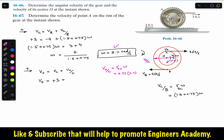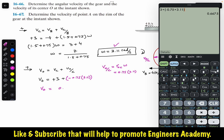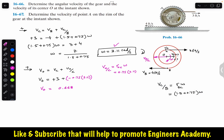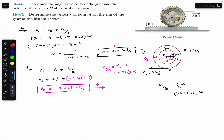Since V_O/C is towards the left, we write minus 0.75 × 3.11. So V_O = 3 + (−0.75 × 3.11), which gives V_O = 0.668 feet per second. Since the units are in feet, this is 0.668 ft/s. Since we assumed V_O is towards the right and got a positive answer, V_O has a magnitude of 0.668 ft/s directed to the right.